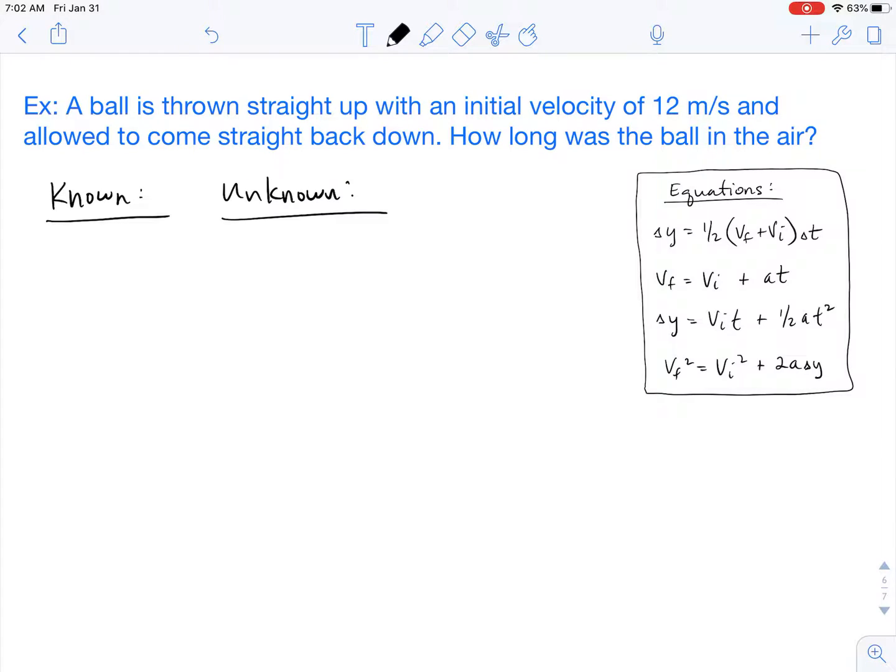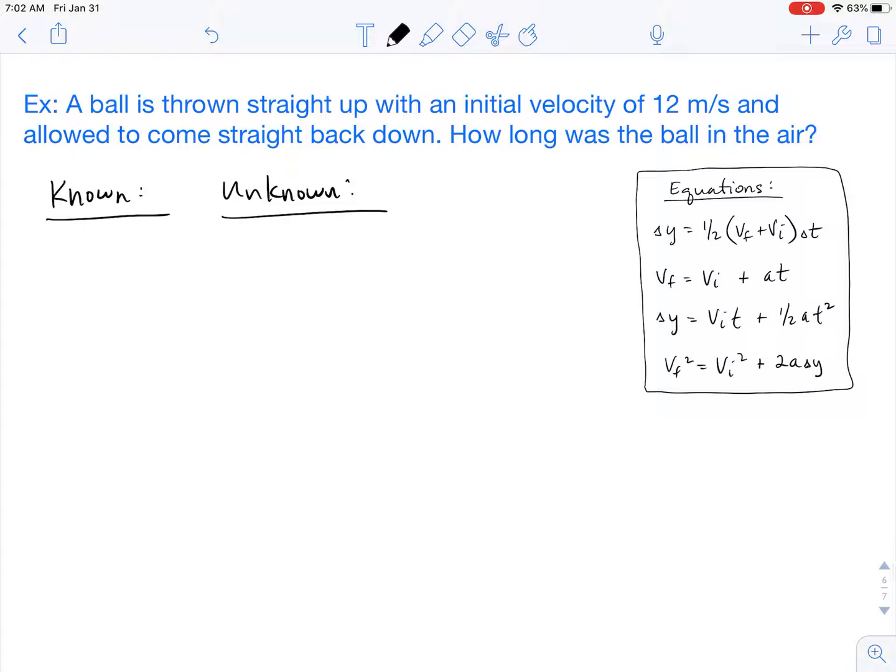For a problem like this, it might be a helpful idea to draw a picture. Since we are working with free-fall, our object is going to go straight up and then come straight back down. There's really two ways to solve for this problem. I'm going to show you both ways. To begin this problem, and like most physics problems, we should start by listing our knowns and our unknowns.